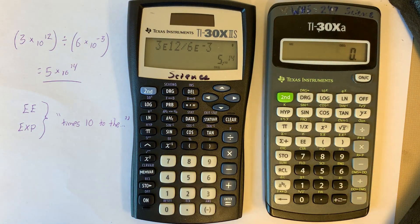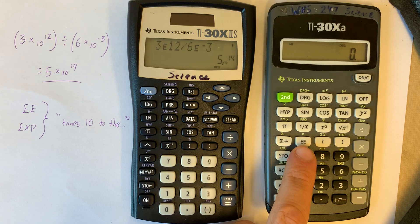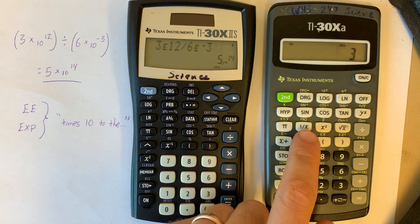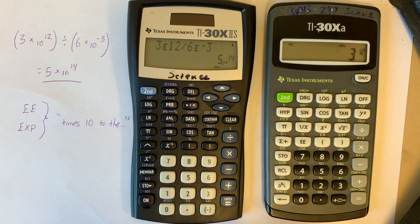Let's do this on this calculator. This calculator has an EE button without the second feature, which is nice. So I'm gonna type 3 EE 12. That means 3 times 10 to the 12th.